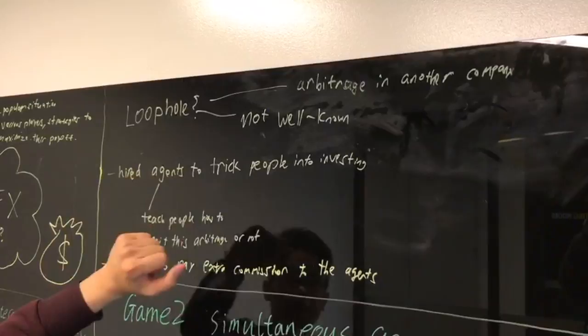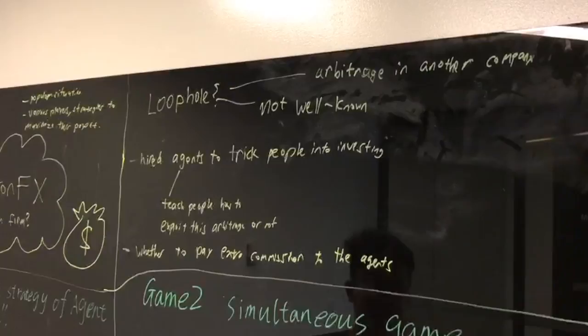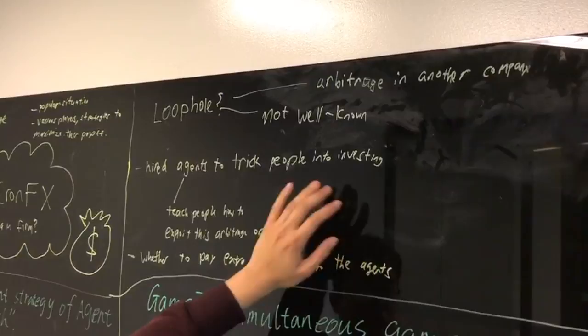However, there is a silver lining. There is a chance, if you do know how to arbitrage in another company, that you can actually have a definite 100% profit. In the sense that you invest some in INFX and some in another company, and if INFX doesn't do well, you still have the other company to back up on. That's how you make profit. But this silver lining of making profit is not well-known.